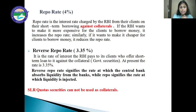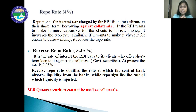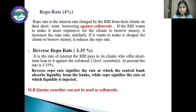The next tool is the reverse repo rate, which is 3.35%. The reverse repo rate will always be less than the repo rate. The reverse repo rate is the rate of interest the RBI pays to its clients who offer short-term loans to it against collaterals. In this case, it is the RBI that pays interest to financial institutions, and the RBI keeps government securities as collateral with these institutions. The reverse repo rate signifies the rate at which the central bank absorbs liquidity from banks, while the repo rate signifies the rate at which liquidity is injected into the market.